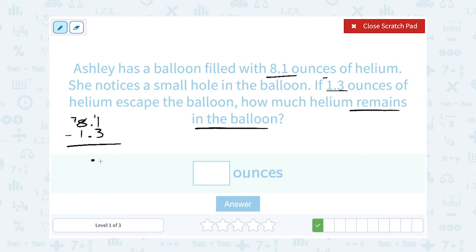Okay, well 11 minus 3 gives me 8. And then in the ones place, 7 minus 1 gives me 6. So the balloon would have 6.8 ounces of helium remaining.